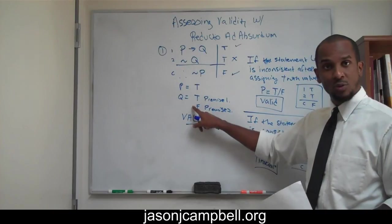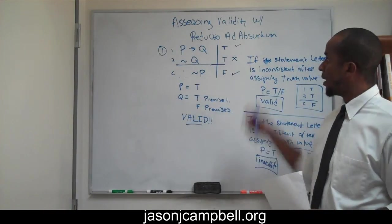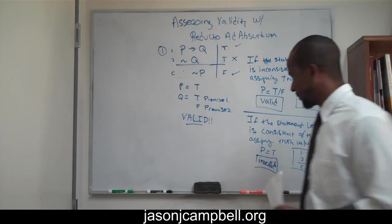You cannot assess two different truth values for a statement letter, because that's inconsistent. So number one is valid. This structure is valid.